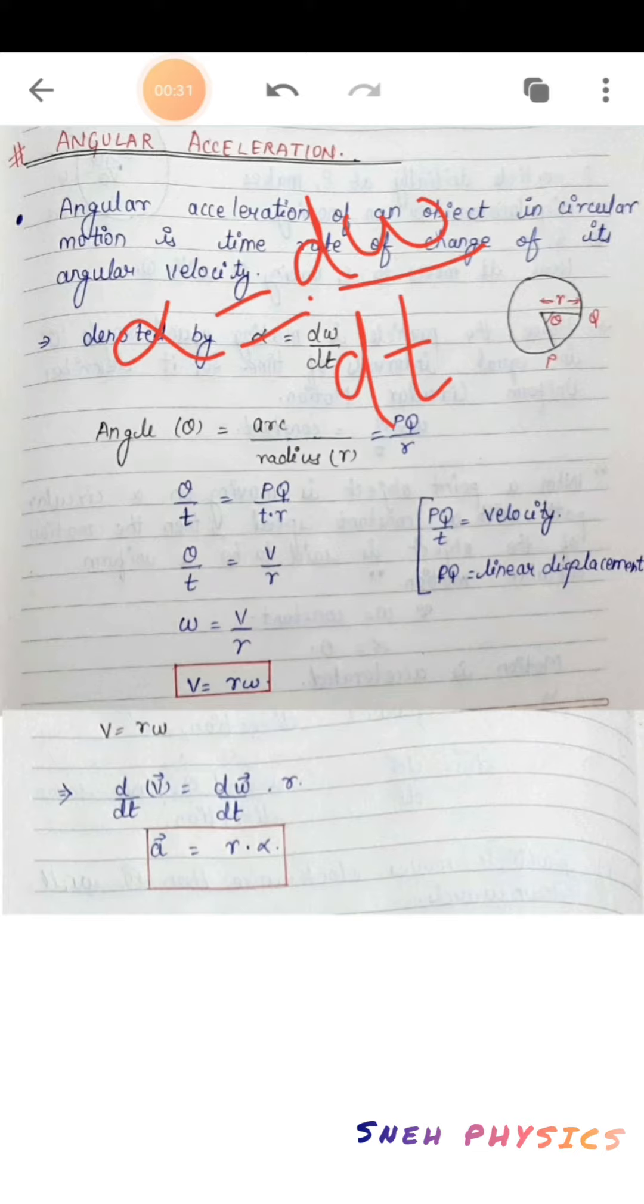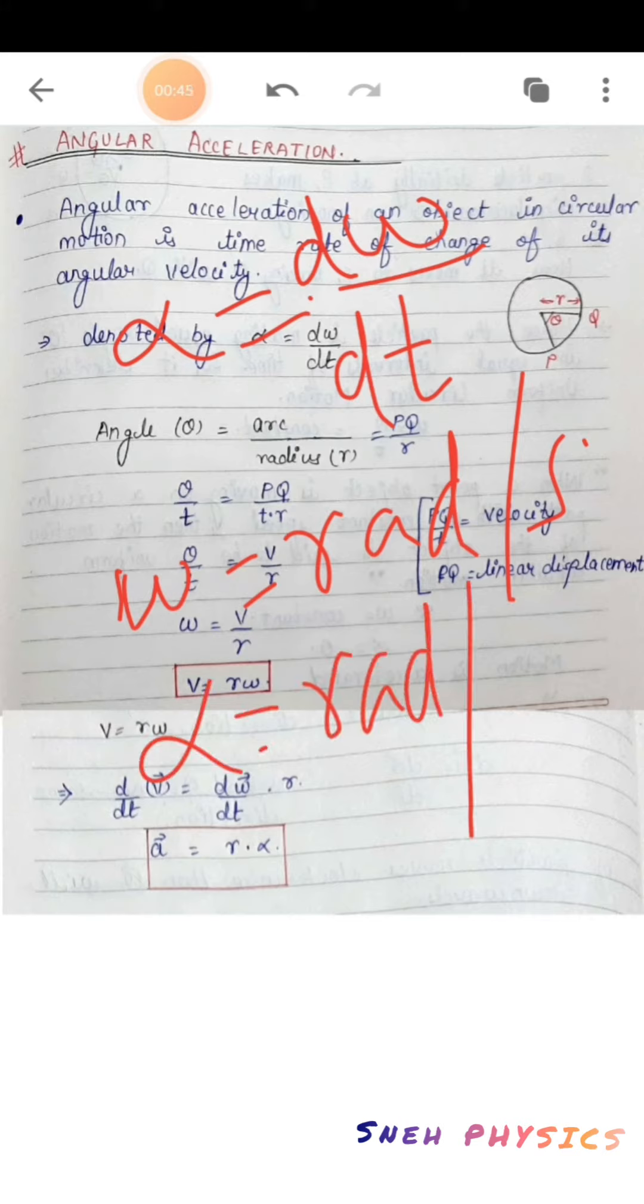Angular acceleration is given by d omega by dt, and its unit will be as follows: omega is denoted as radian per second, so acceleration will be denoted as radian per second squared.